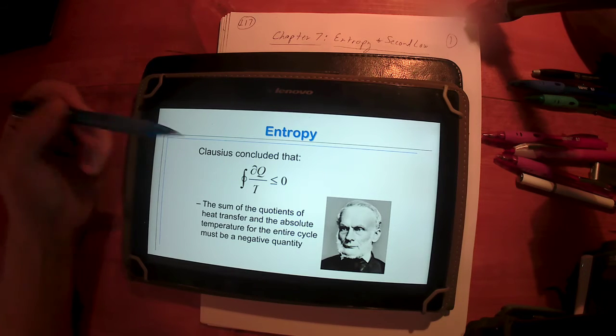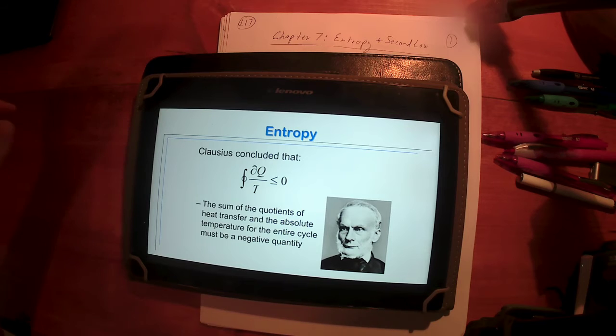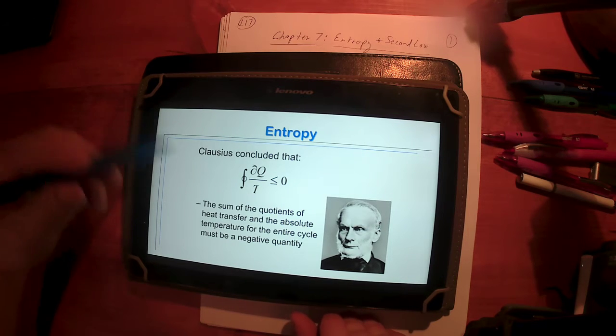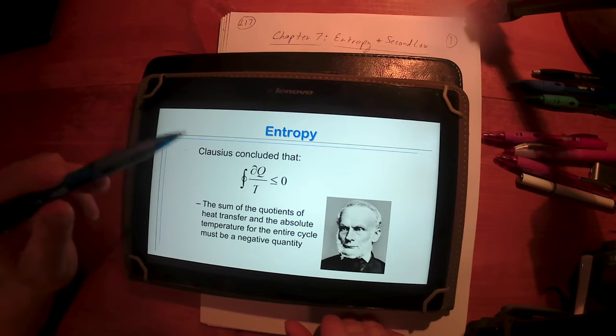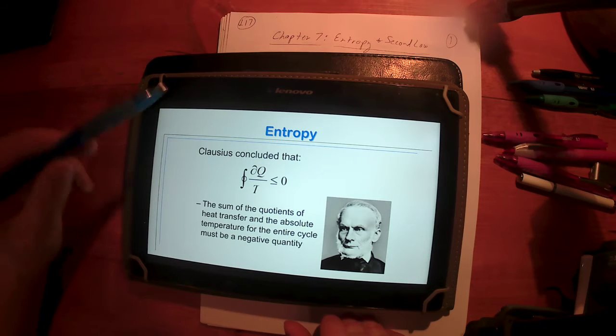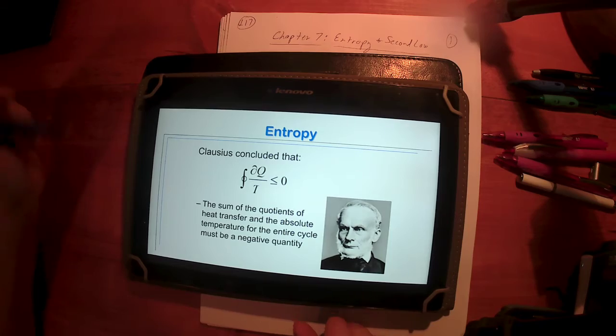Now, again, this is, I call this a cyclic integral. A line integral is often used, for us, we're referring to a cyclic integral. This is an integral evaluated across a cycle. So, starting at one state, finishing at another.